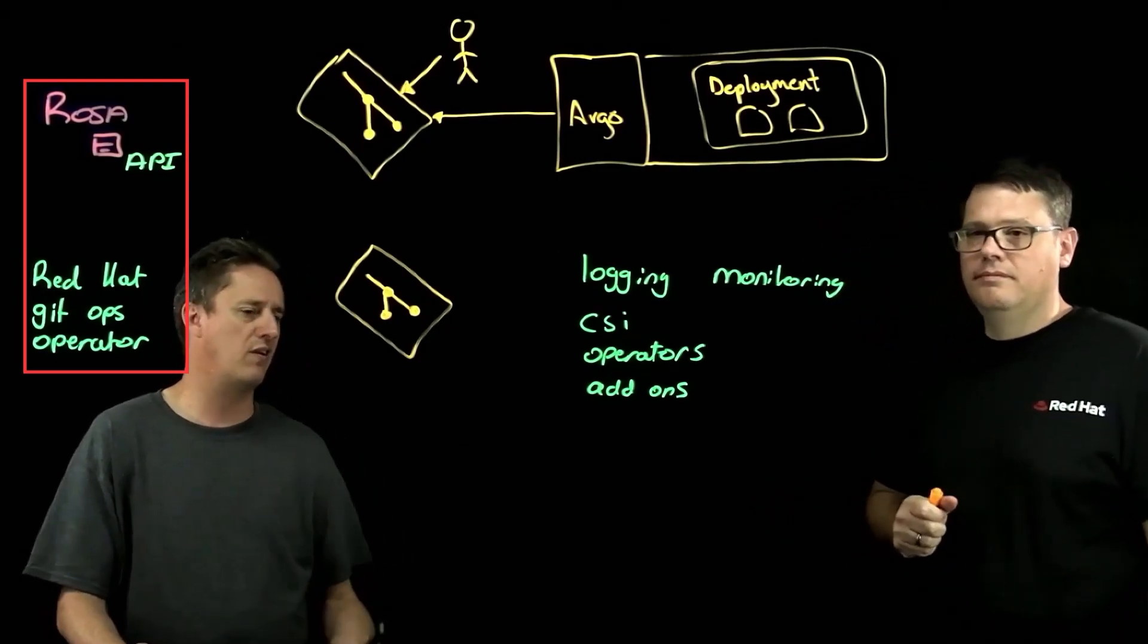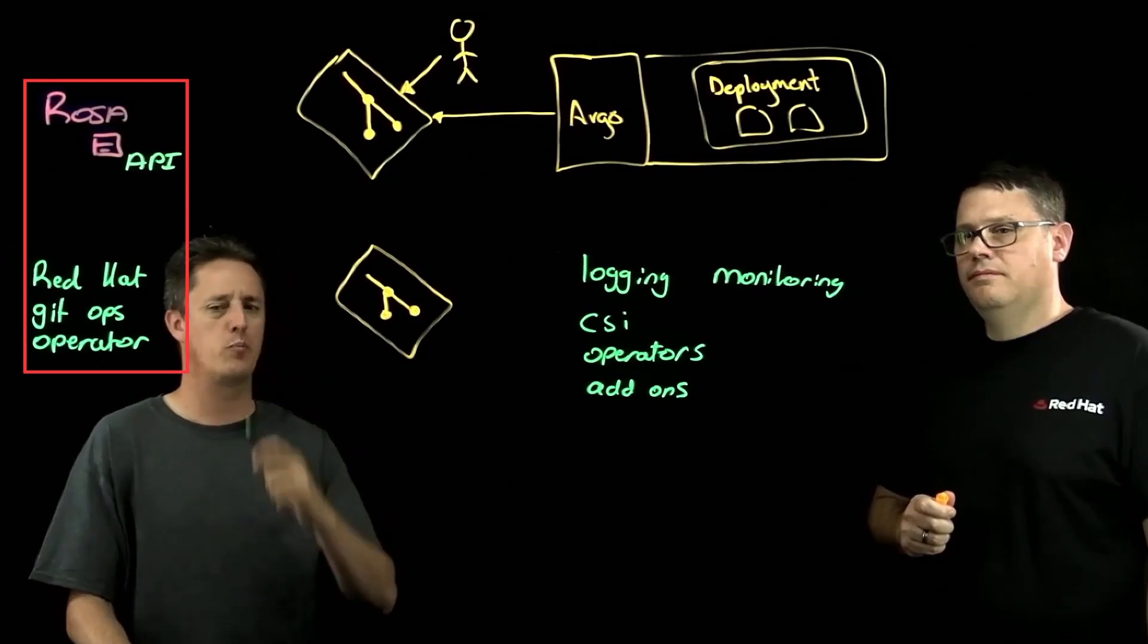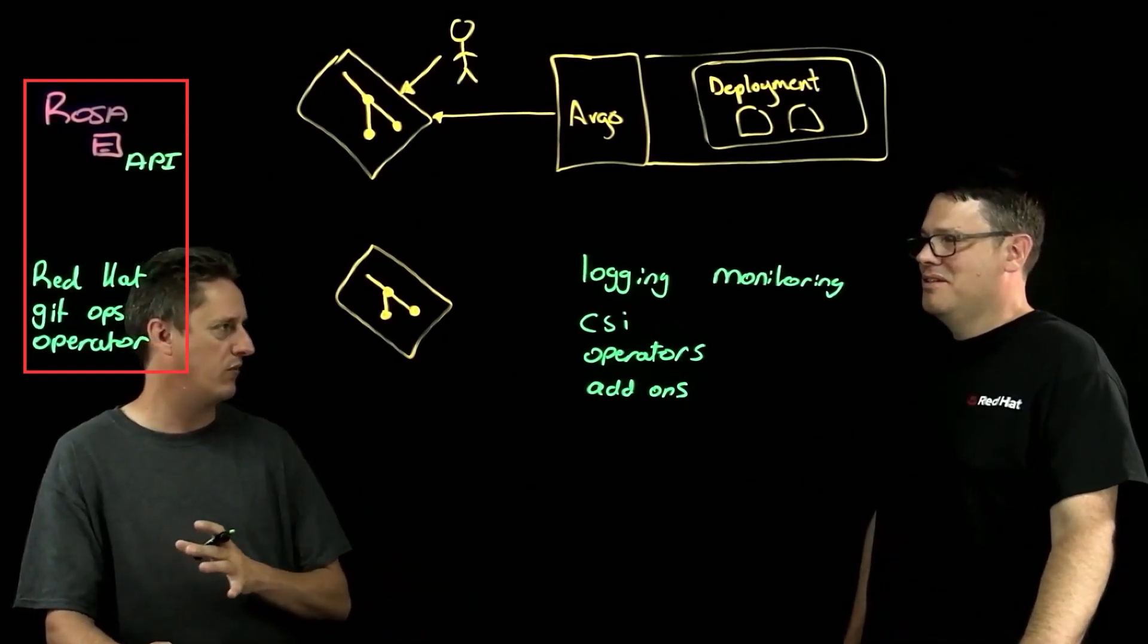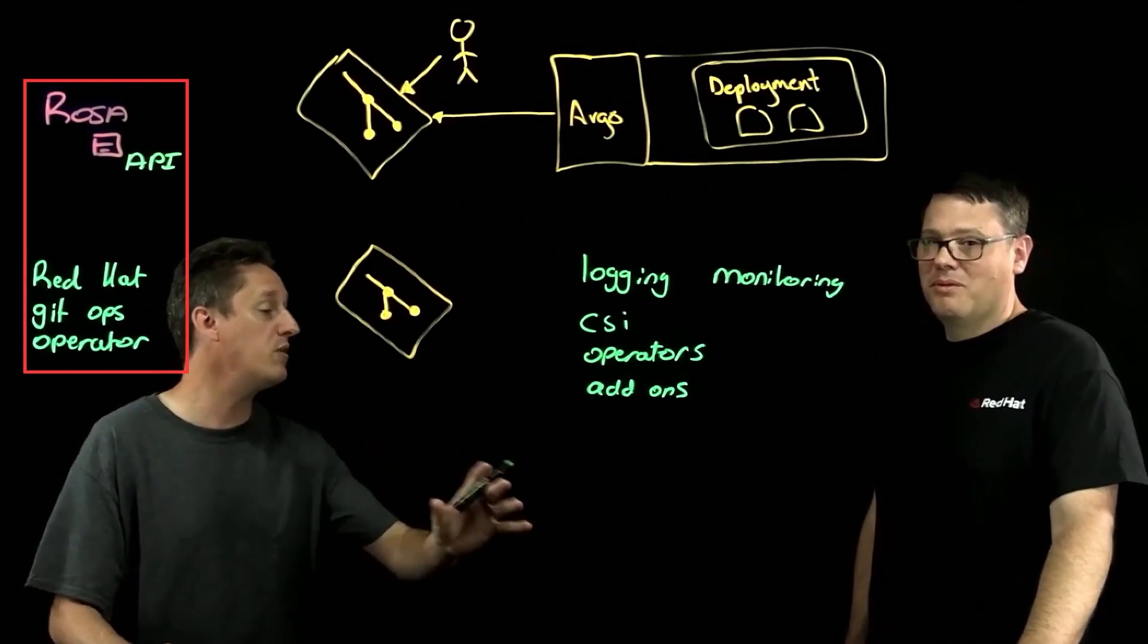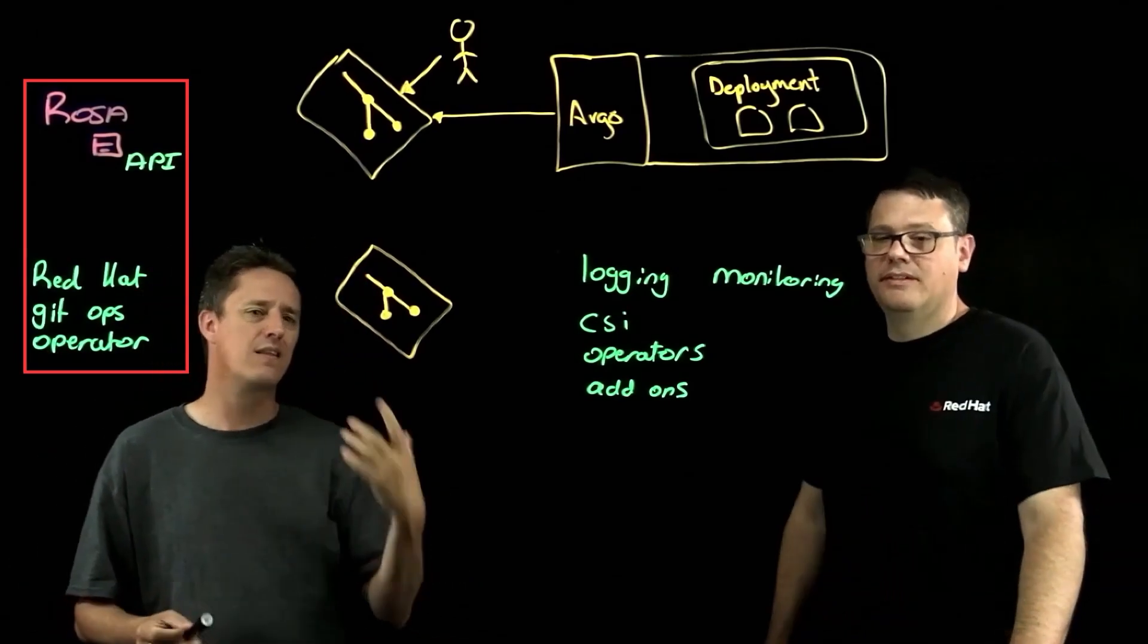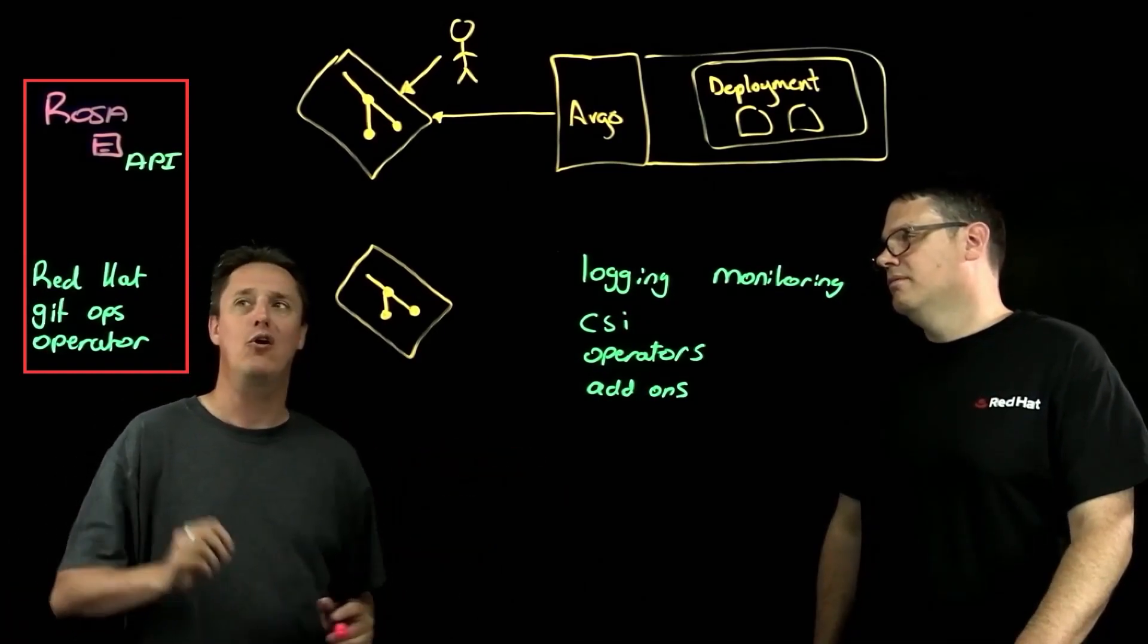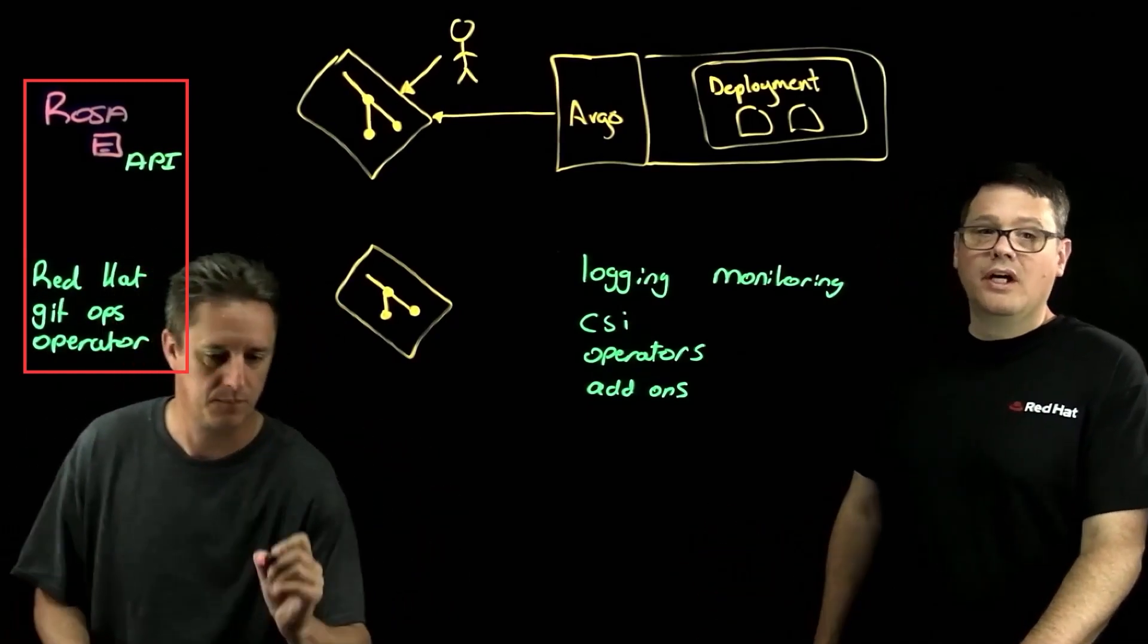But where this becomes more exciting to me is none of the customers I'm working with have one OpenShift cluster. They have non-production, they've got production, they are hybrid, so they have on-premises, they're on the cloud, and they may in many cases be hybrid cloud users where they're using more than one cloud provider. So how do we take this and blanket apply it to a fleet of OpenShift implementations that may include self-managed OpenShift as well as managed OpenShift products?